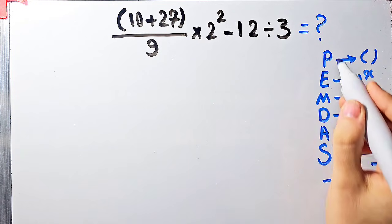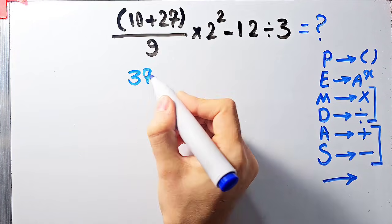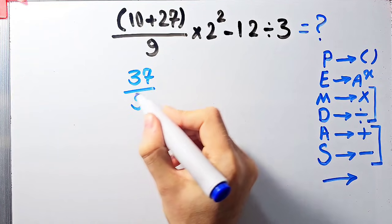According to the PEMDAS rule, first we simplify the parentheses. Inside these parentheses we have 10 plus 27, which equals 37. So we have 37 over 9, times 2 to the power of 2, minus 12 divided by 3.